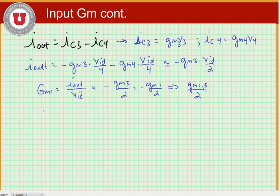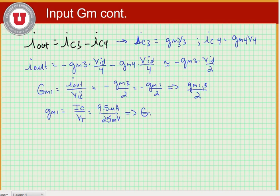So what does that equal numerically? GM1 = IC/VT. We know IC was equal to 9.5 microamps from the prior analysis, and VT is 25 millivolts. Adding our factor of 2 to define big GM1, we find big GM1 = 9.5 μA / (2 × 25 mV) = 190 microsiemens — the transcript states 183.4 μS based on the exact computation.